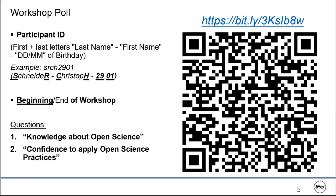Participants are asked to take out smartphones for a brief two-question poll about how much they know about open science and how confident they are in applying its practices. A participant ID using first and last letters of the first and last name plus four digits for day and month of birthday is required to match pre- and post-responses.